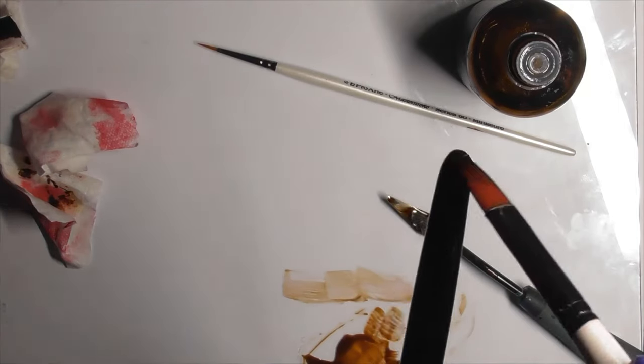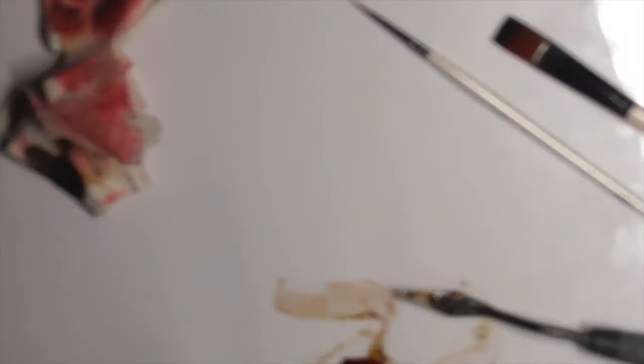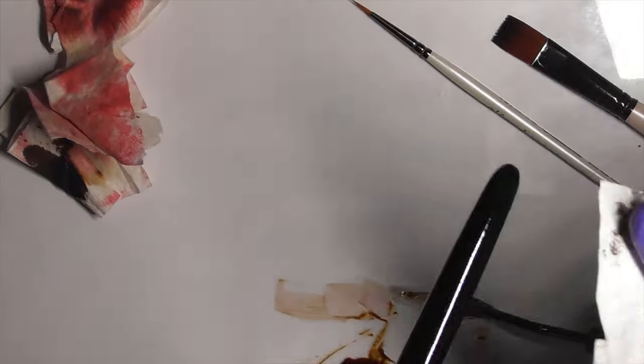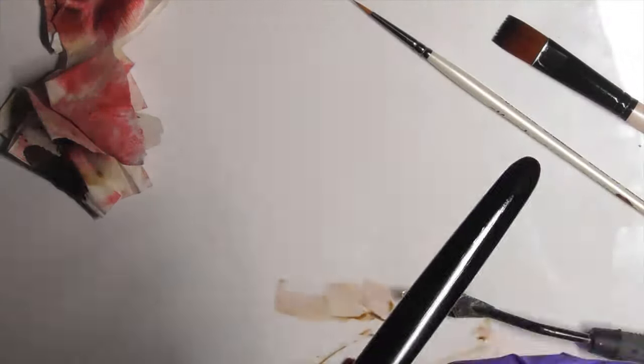Step three, paint a layer of raw Urushi onto the pen to seal it. Wait for 5 minutes and wipe off the excess. Cure it in the fulo for a day.